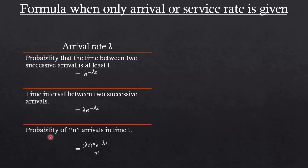The probability of n arrivals in time t is a very important formula: it is given by (lambda t) to the power n, multiplied by e to the power minus lambda t, divided by factorial n. Here n is the number of arrivals, t is the time period, and lambda is the arrival rate.